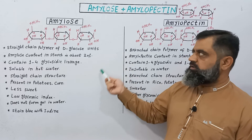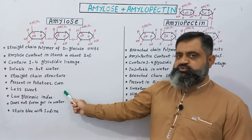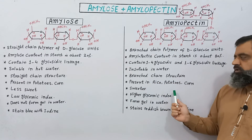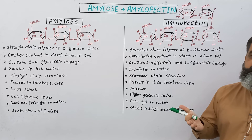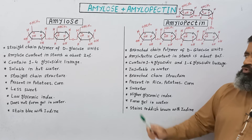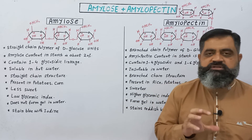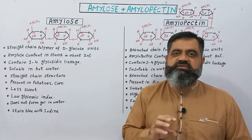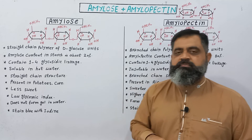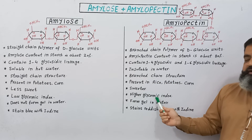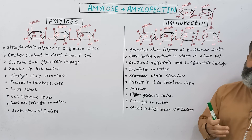Amylose starches are less sweet, while amylopectin starches are sweeter than amylose. Due to the less sweetness of amylose, it has a lower glycemic index, meaning it releases less glucose to the body and provides less energy. Amylopectin starches, on the other hand, have a higher glycemic index, releasing more glucose molecules and providing more energy.